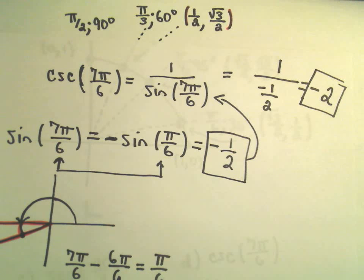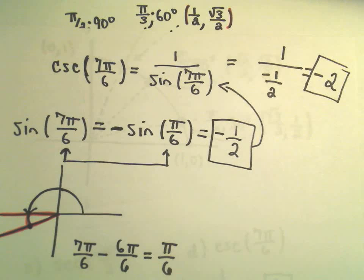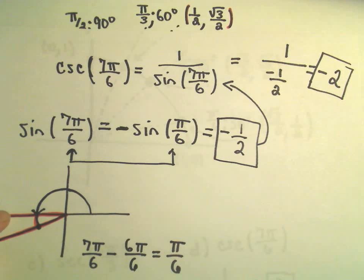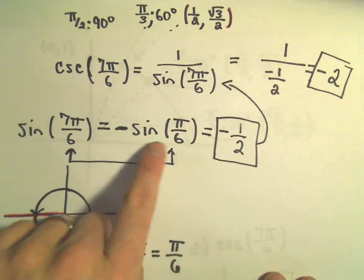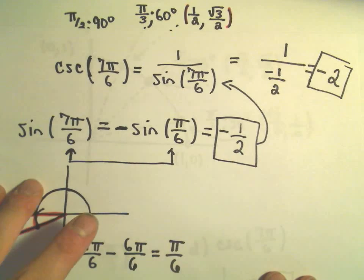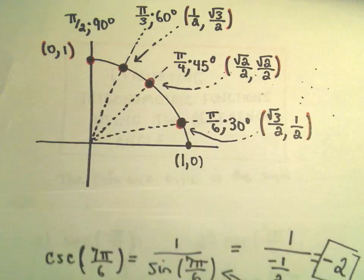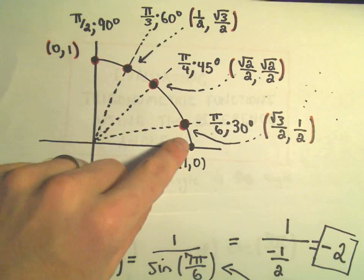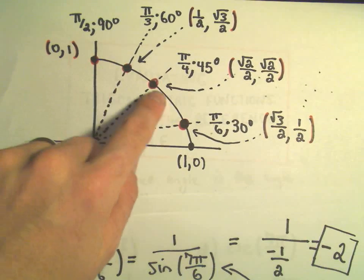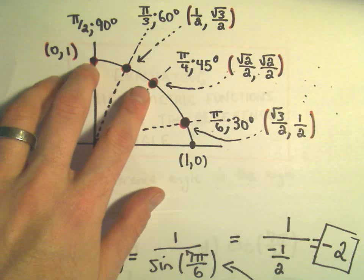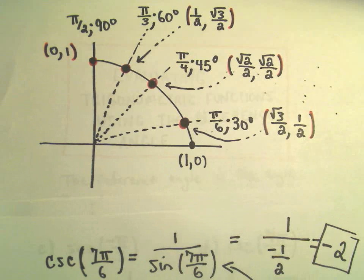These seem a little long the first few times you do them. Finding reference angles — you'll do this stuff so much you'll definitely speed up. Then it's really just picking out the signs — positives or negatives. As long as you can remember the stuff in the first quadrant, once you practice a few, you can go through these pretty quickly.